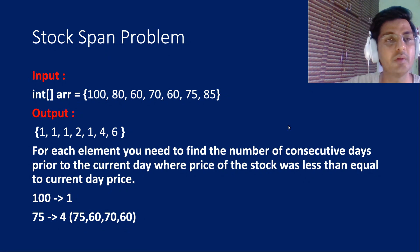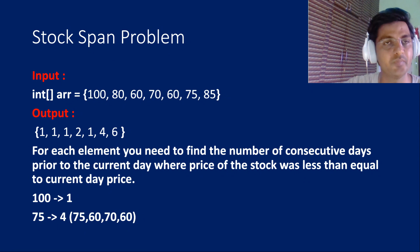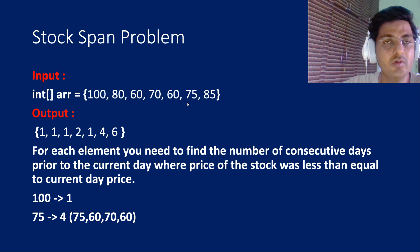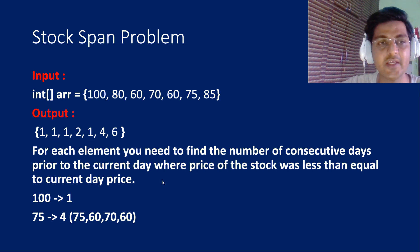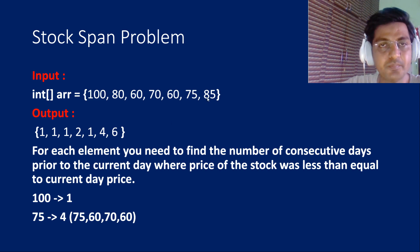So what is this problem? Our input will be the price of the stock on each day. For example, we have the array: 100, and we need to calculate for each element the number of consecutive days prior to the current day where the price of the stock was less than or equal to the current day's price.